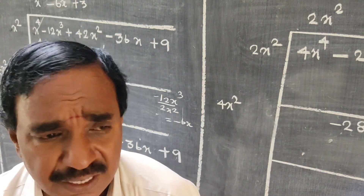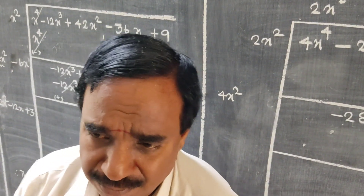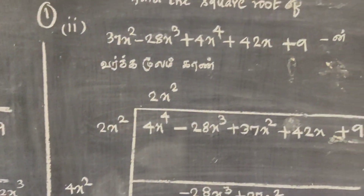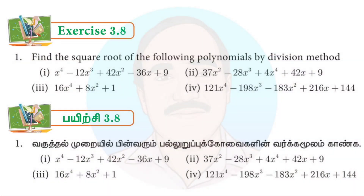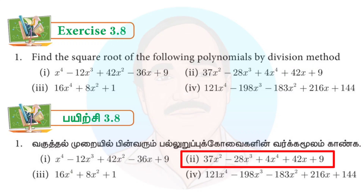Exercise 3.8, Problem No.1, Second Subdivision. Find the square root of 37x² minus 28x³ plus 4x⁴ plus 42x plus 9 by the Division Method. We will arrange the expression and find the square root.